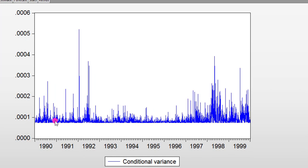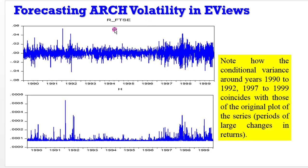Looking at it, you can see that it is stable over time. The plot of the conditional variance is stable over time, and there is a mirrored representation from the actual plot of the return to FTSE. I have put the plot of the returns of the FTSE stock on the upper part, and below it is the plot of the conditional variance. You will see that the conditional variance around years 1990 to 1992 and those from 1997 to 1999 coincides with those of the original plot — you can see periods of volatility clustering. It mirrors what is also here. Volatility clustering means when you have periods of large changes followed by further large changes, and periods of small changes followed by further small changes. So the plot of the return to the FTSE stock and its conditional variance mirror one another.